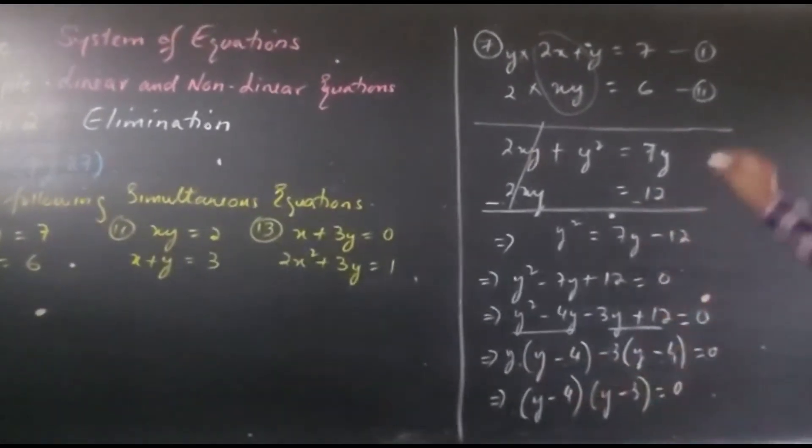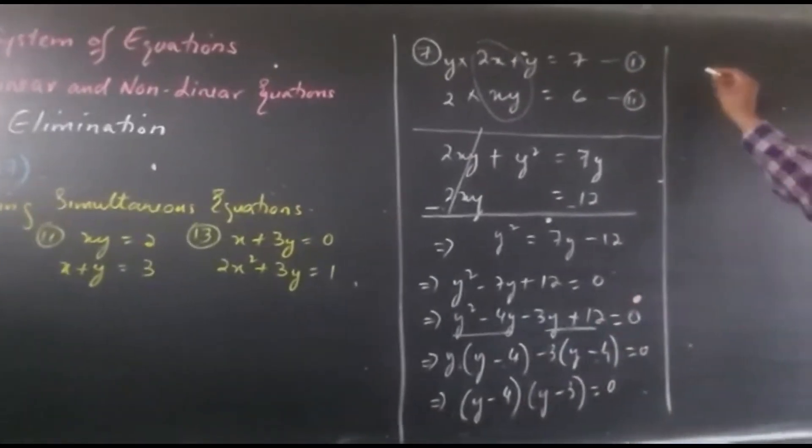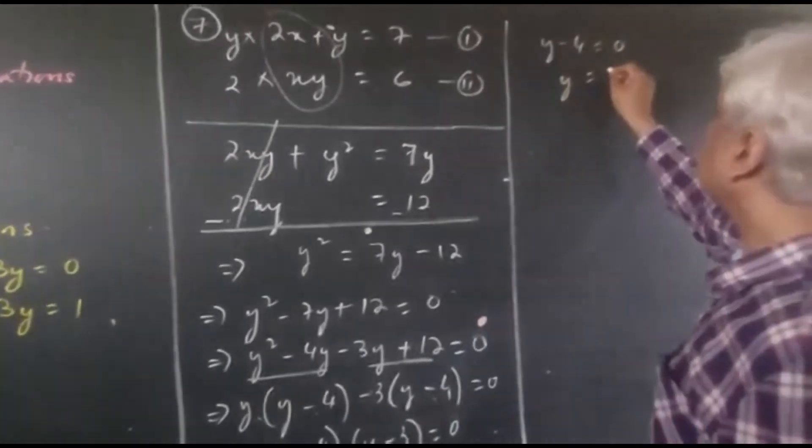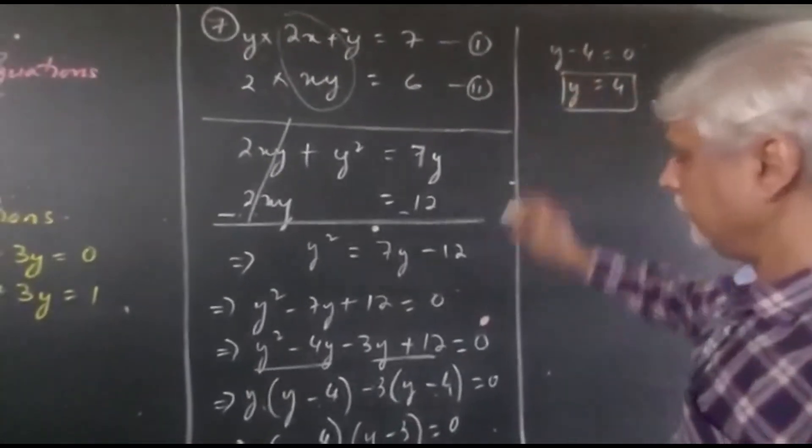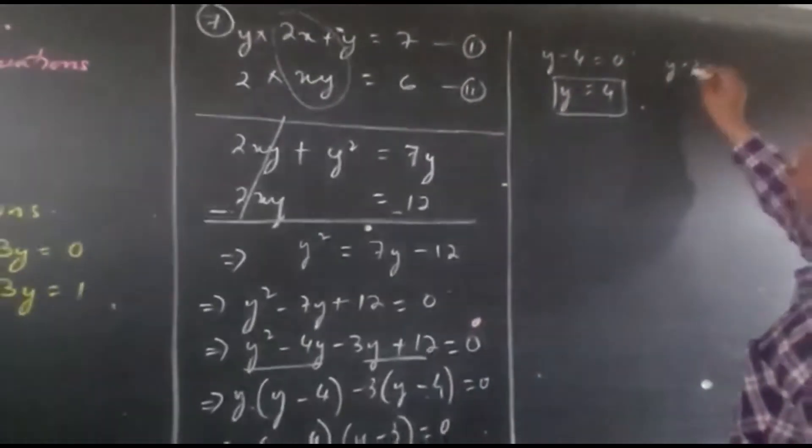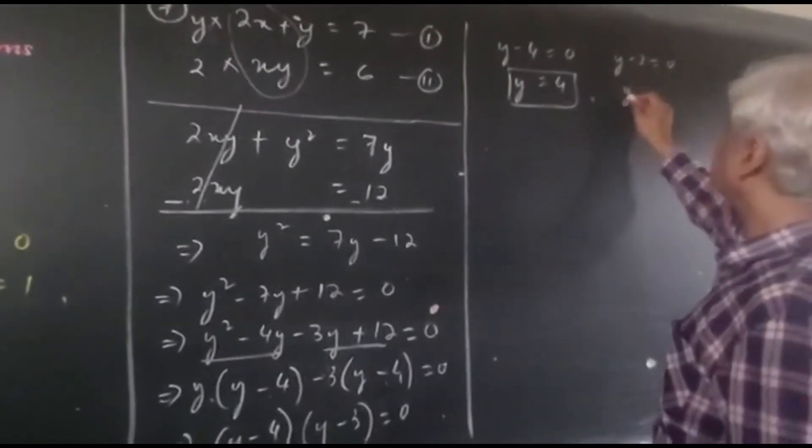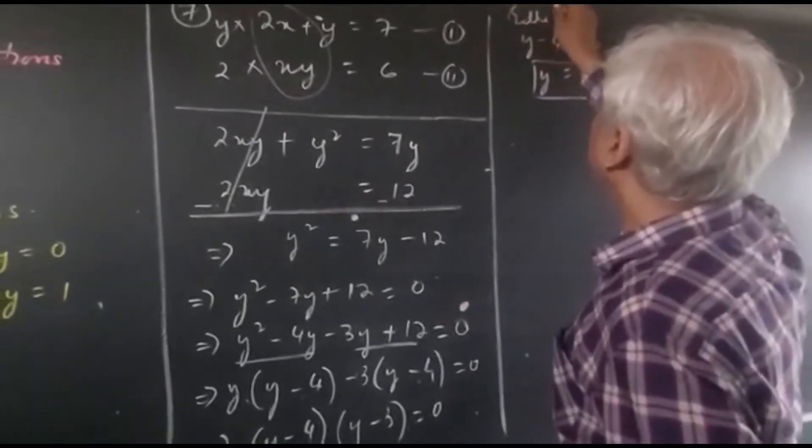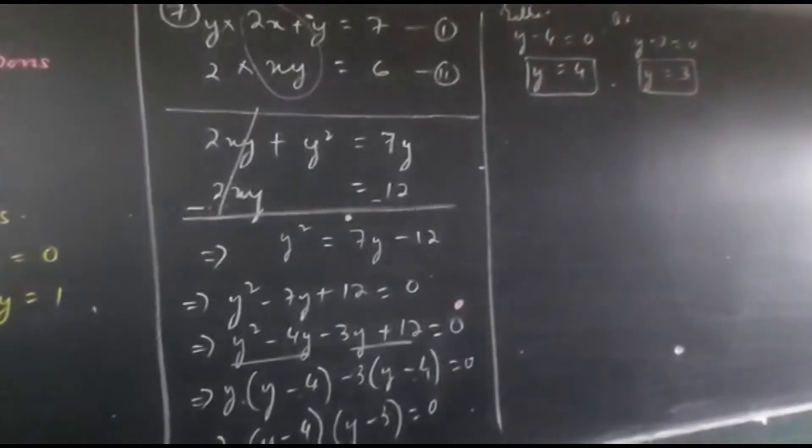Now let's solve this. Y minus 4 equals 0, so we will get y equals 4. And if we take y minus 3 equals 0, we get y equals 3. So these are the two cases.